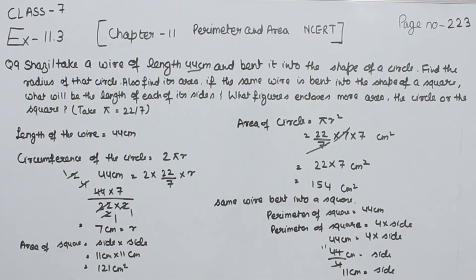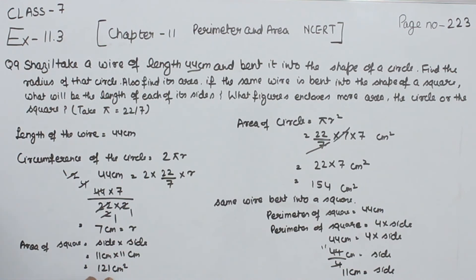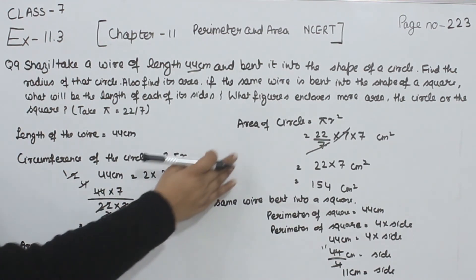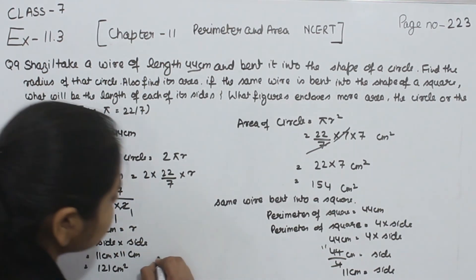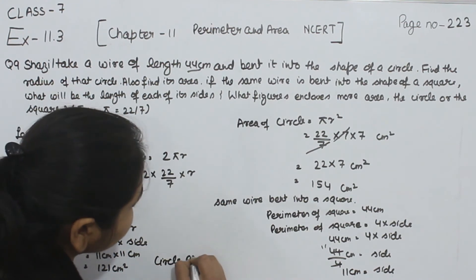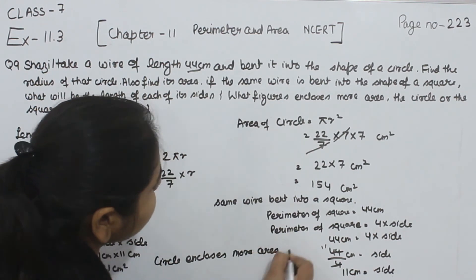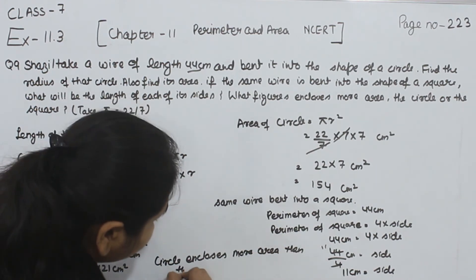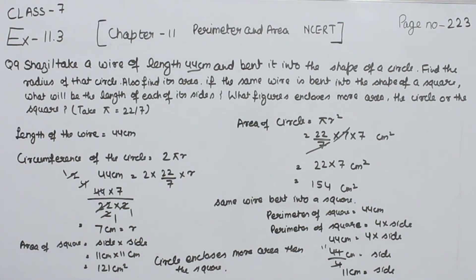Now the area of the circle is 154 cm² and the area of the square is 121 cm². So the area of the circle is enclosing more area. Therefore, the circle encloses more area than the square. With this we have completed question number 9. In the next video we are going to start with question number 10.